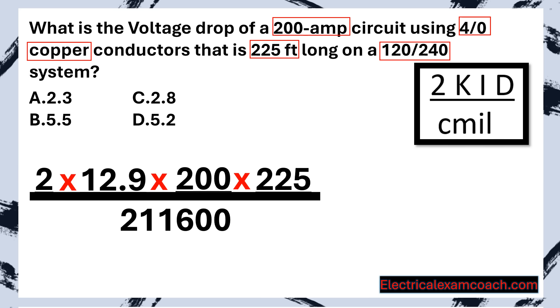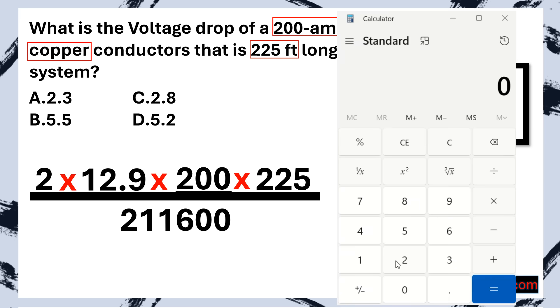Now, all we have to do is go to our calculator and plug it in. We take 2 multiplied by 12.9 equals, multiplied by 200 equals, multiplied by 225 equals. And then we divide that by 211,600. And it's as simple as that. That lets us know that we have a 5.48, which we would round up to 5.5 voltage drop on this circuit. And we select B. Great job.